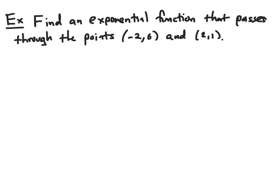In this example, we want to find an exponential function that passes through the points (-2, 6) and (2, 1). This is somewhat similar to the deer population example, but a little more complicated because we're not directly given the initial value. We again want to find f(x) = a·b^x, but we need to find both a and b using the two given points.